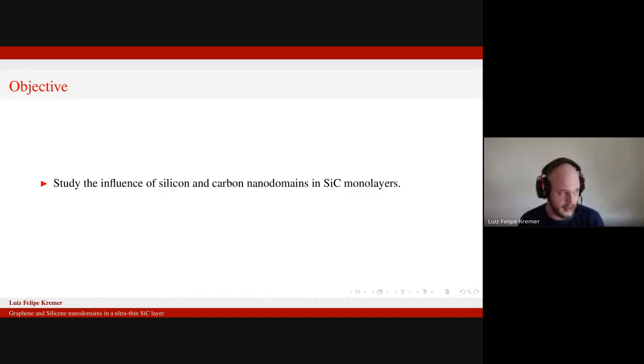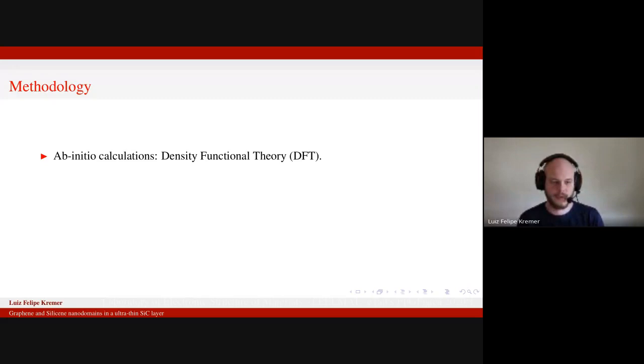So the idea of the work is to study the influence of these domains in the silicon carbide layers. To do this, we use ab initio calculations within density functional theory framework, we call it DFT. In DFT, we have a Schrodinger-like equation that's modified, and the main object is not anymore the wave function, but the electron density, which can be measured and has physical meaning.